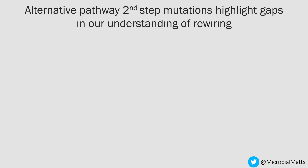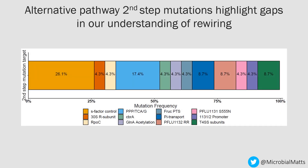When we look at the second step mutations for this alternative pathway, we find that they really highlight gaps in our understanding of the rewiring process. There are mutations in a very large number of genes, but they can be grouped into three broad categories. The first is global gene expression control: 26% of mutations occur in a sigma factor regulatory system, and some occur in RPoC — all components of the RNA polymerase complex. There are also mutations in a 30S ribosomal subunit. These will change global gene expression in quite a drastic way, affecting a large number of genes.